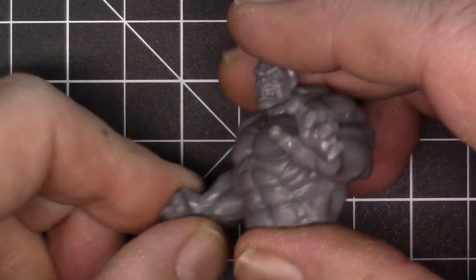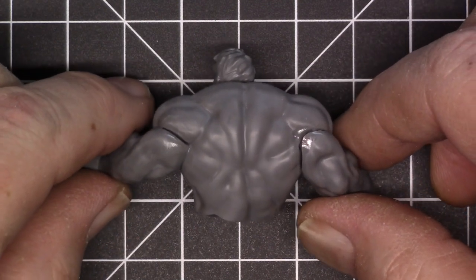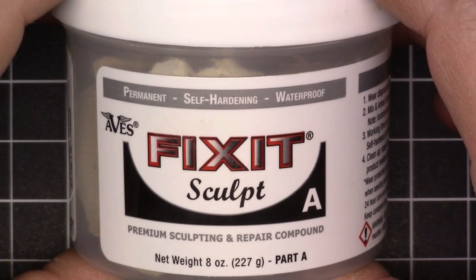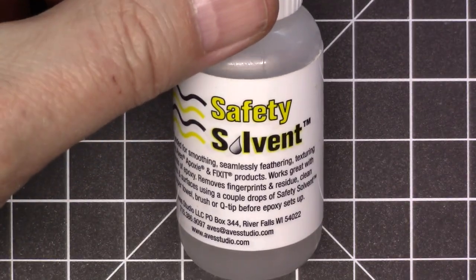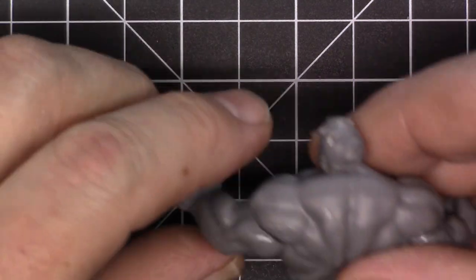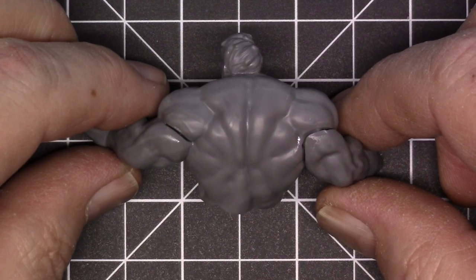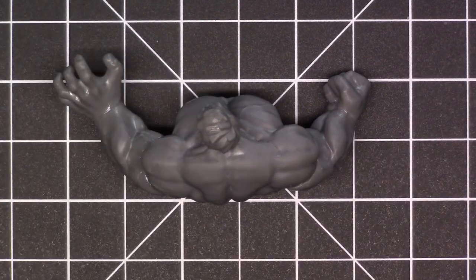Alright I got the arms on there but I think I made it worse because I still have the gaps on the back here. But no worries, I'm just going to fix it with some Aves epoxy sculpt. What I use is the Fix-it sculpt, there's an A and there's a B. You mix some even parts, one to one, and then I use the safety solvent to smooth everything out. So let me get that all set up, get a little ball of Aves ready to go.